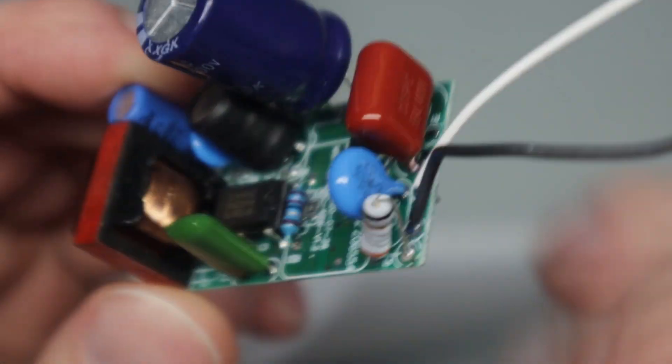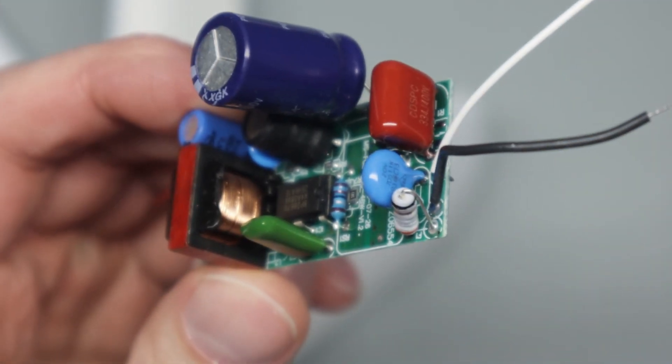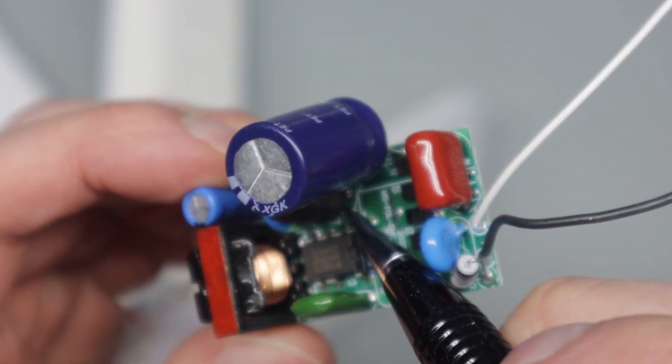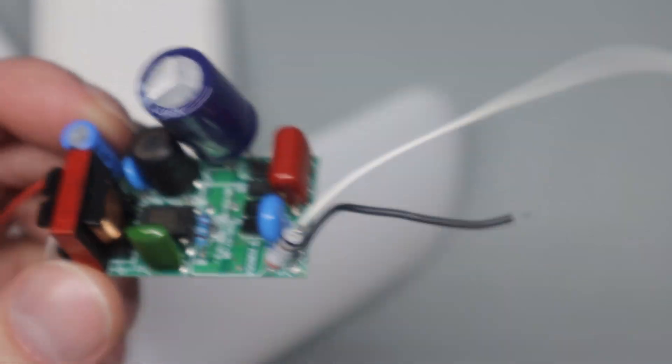And the main thing to note is there is a couple, let's see if I got it zoomed in here, a couple surface mounts underneath this resistor. And there is another surface mount resistor underneath this inductor, which I didn't take off.